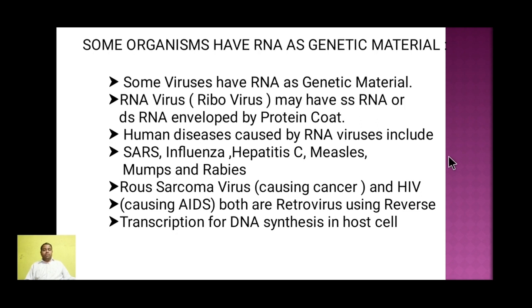Some organisms do have RNA as genetic material. There are some viruses which have viral RNA as genetic material — these are called riboviruses. They may be single-stranded RNA or double-stranded RNA, and it is covered by a proteinic coat.